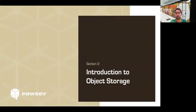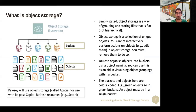Now, introduction to object storage. Object storage is a little bit different. Simply stated, object storage is a way of grouping and storing files that is flat — there's no hierarchy to it. Object storage is a collection of unique objects. You cannot interactively perform actions such as editing them in object storage; you have to remove them from object storage to do so. You organize them into buckets by placing objects in those buckets, and you can view buckets as an aid for organization.